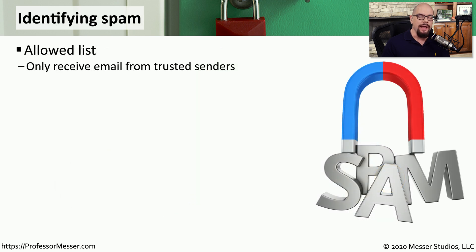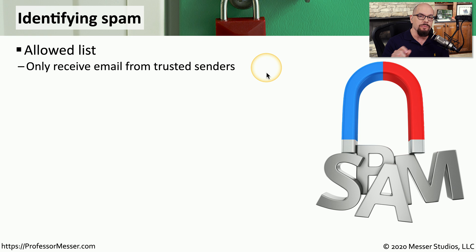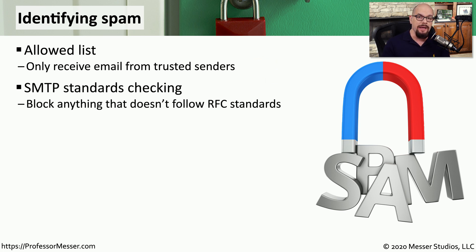The email gateway or spam filter looks at these messages for particular characteristics. One of these might be an allowed list, so that only email from trusted senders is allowed in. This requires quite a bit of maintenance to keep your trusted senders list up to date, but it would certainly prevent anyone else from sending messages to your users. Your spam filter can also identify when messages are not compliant with the RFCs and throw out any messages that seem to go outside the scope of the standards.